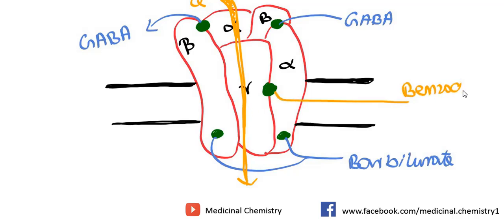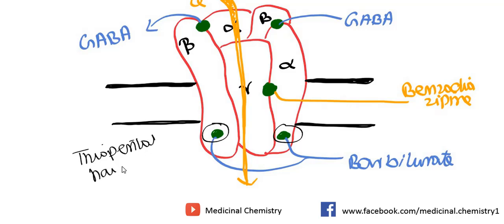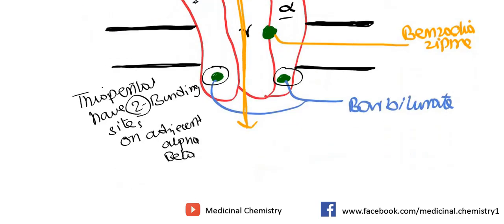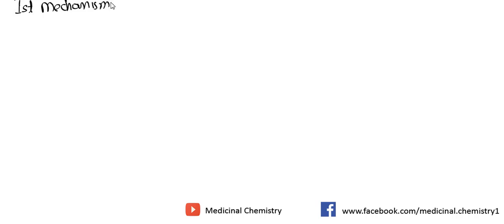The orange line represents chloride ion conductance. When GABA binds to any of the receptor units, it opens the gated channels and chloride ions enter. Barbiturates and thiopental sodium have two binding sites — one adjacent to the alpha subunit and one adjacent to the beta subunit. Remember that thiopental sodium and barbiturates have two distinct binding sites: one on the alpha unit and one on the beta unit.